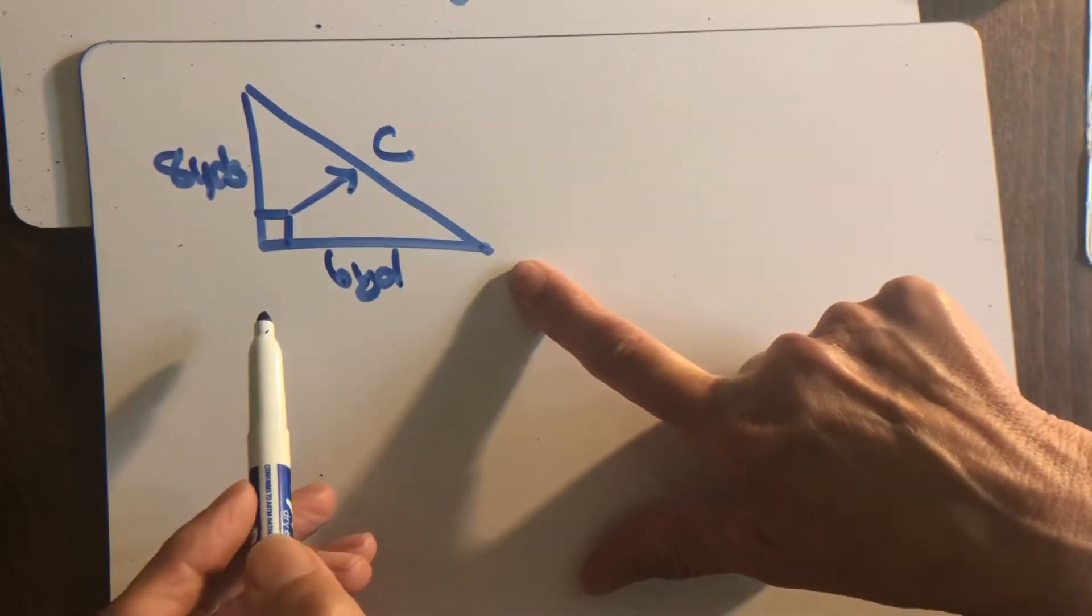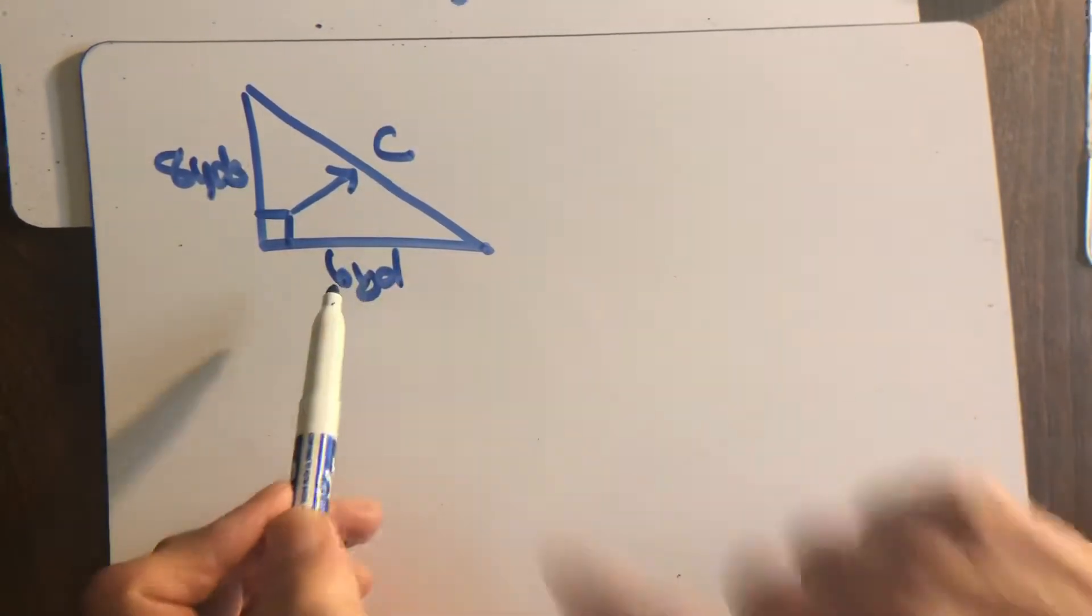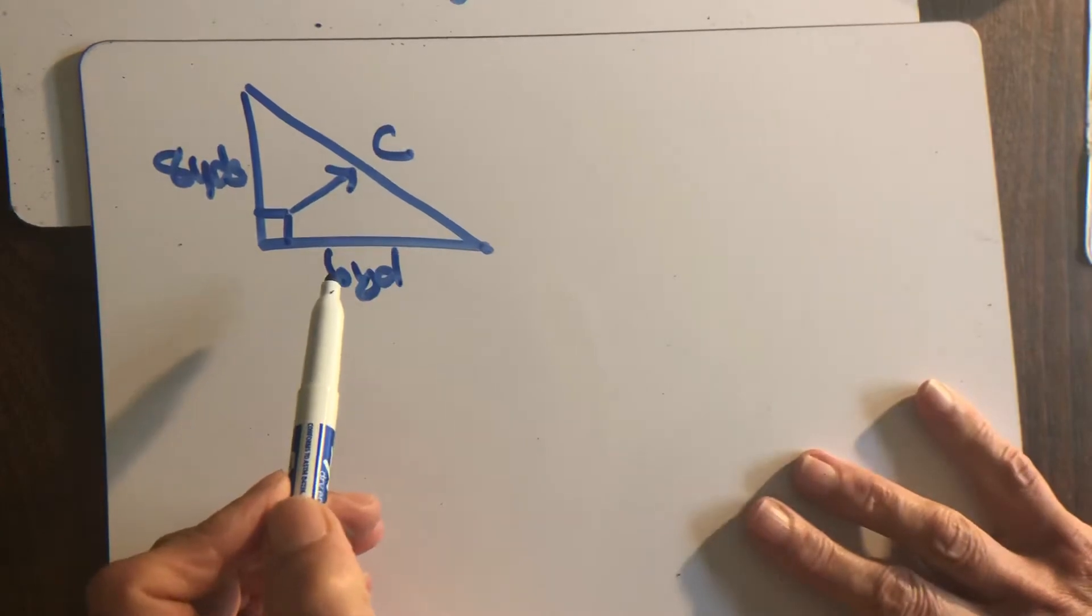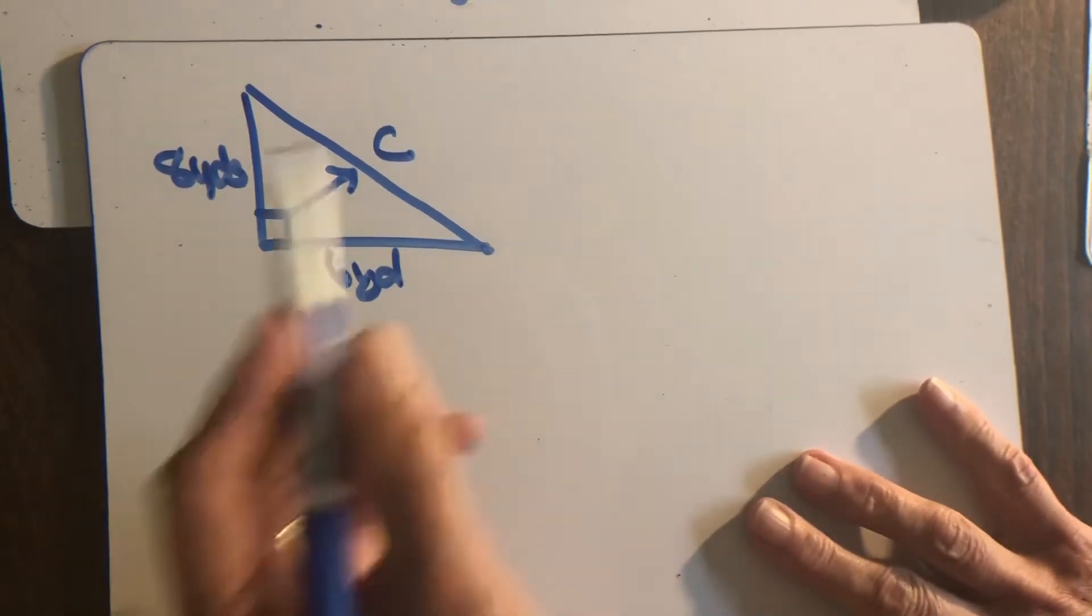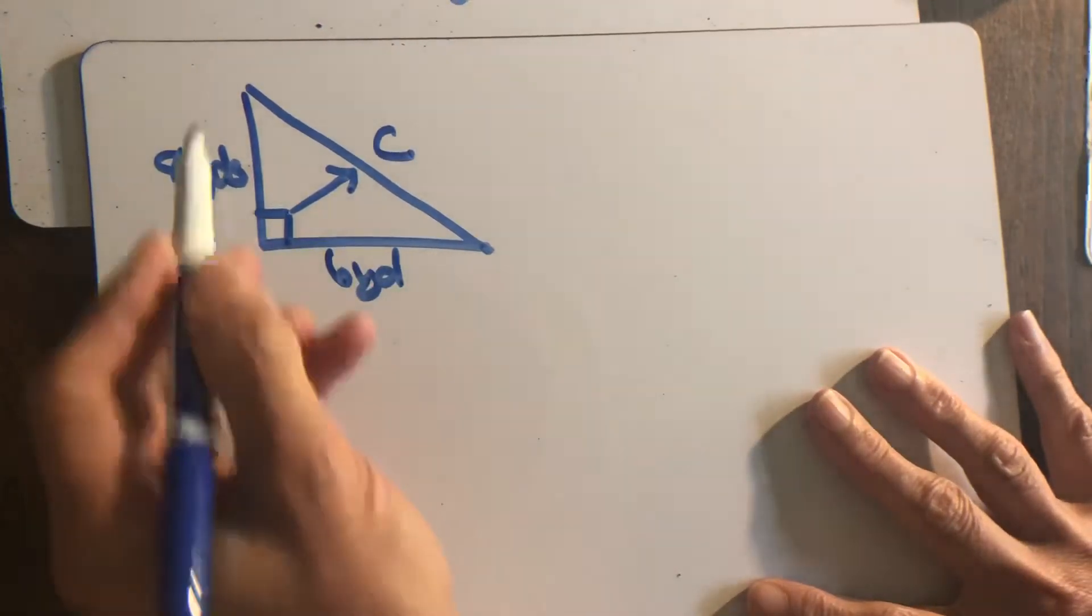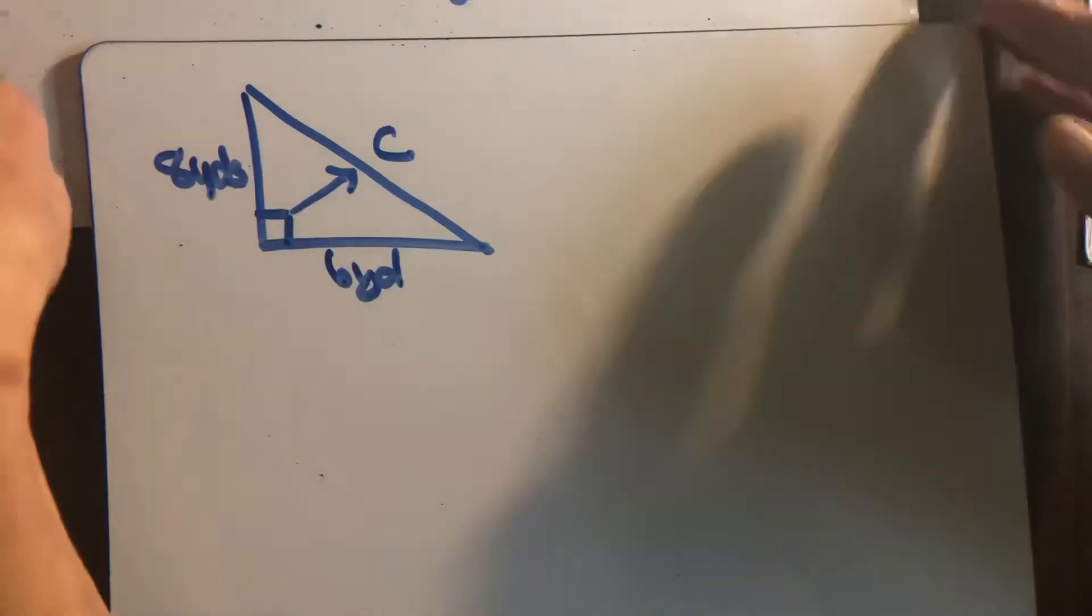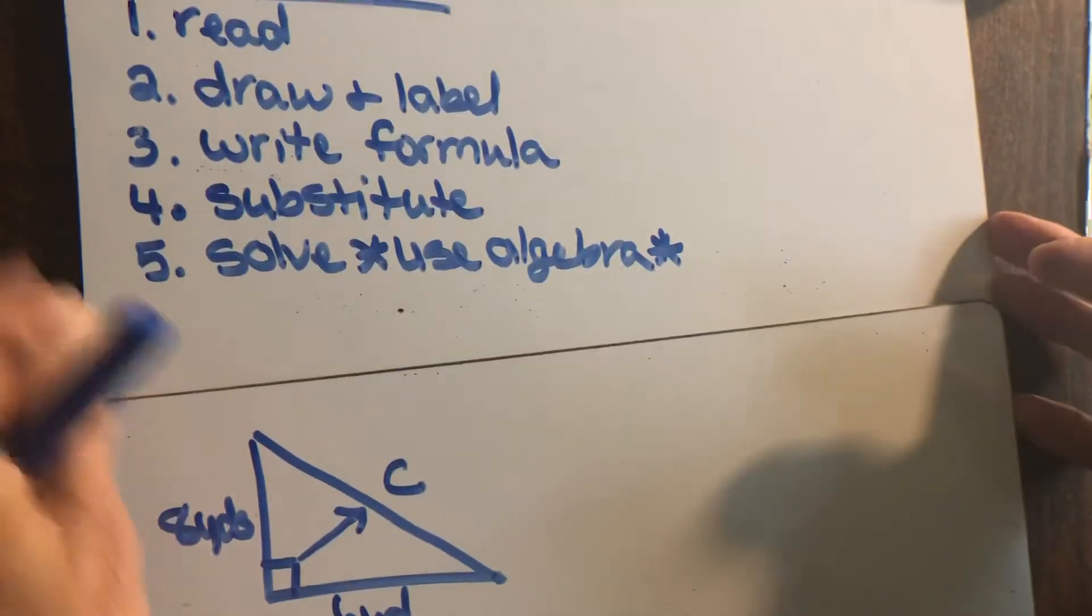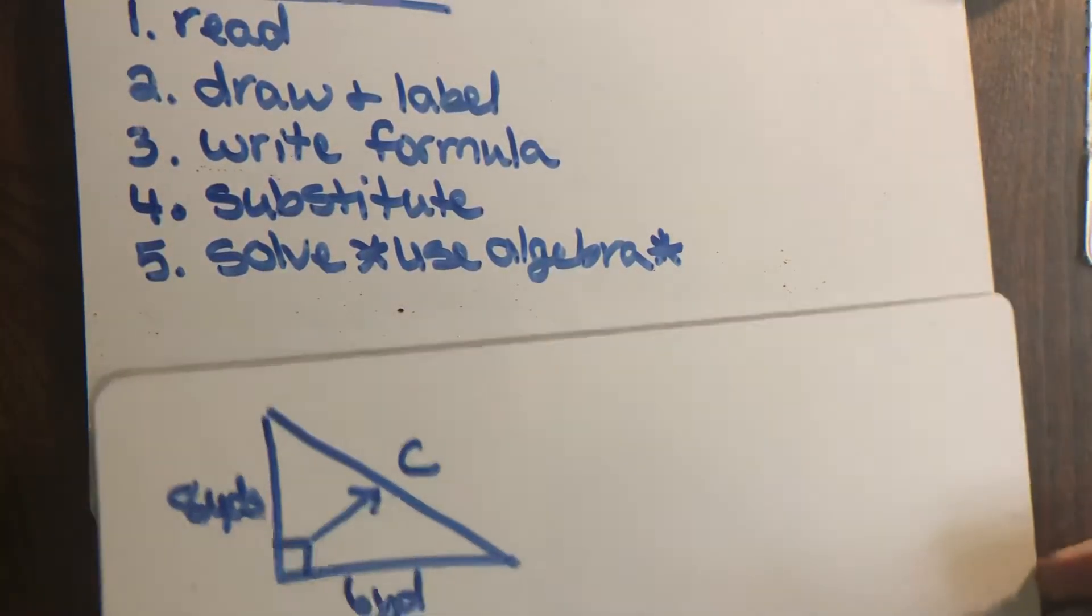So that's how the problem was already set up. Go ahead and draw your arrow so that you can make sure C is in the right spot, because standardized tests like to call this side C to throw you off. So we're looking for the length of C. We've already drawn and labeled our problem. Now we're going to write our formula.